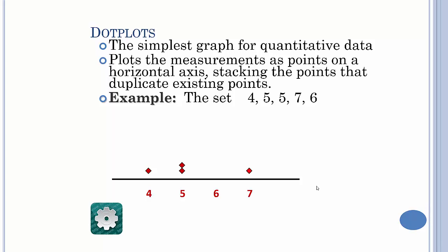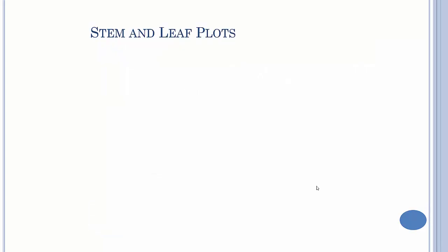So that's why we have two dots for five, one dot for seven, one dot for six and four, and that's it. That's our dot plot.